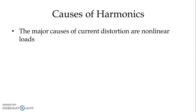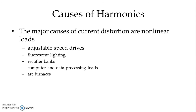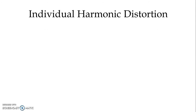Mostly the major causes of current distortion are non-linear loads. For example, adjustable speed drives, fluorescent lighting, rectifier banks, computer and data processing loads, arc furnaces, etc. are a number of non-linear loads which cause very high current distortion. Now let us study individual harmonic distortion.